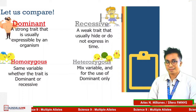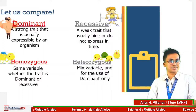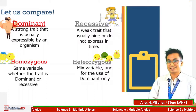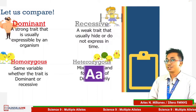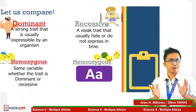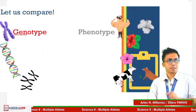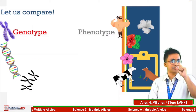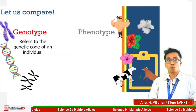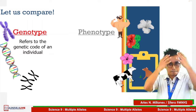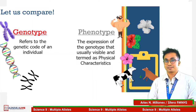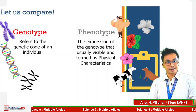But remember, if there is the presence of a capital letter, it only means that the trait is dominant. Genotype and phenotype are almost the same, but their slight difference is genotype refers to the genetic code, while phenotype refers to the physical characteristic given by the genetic code.